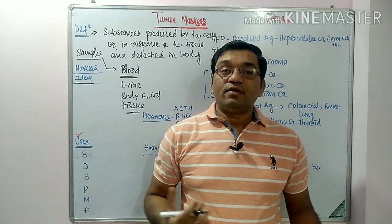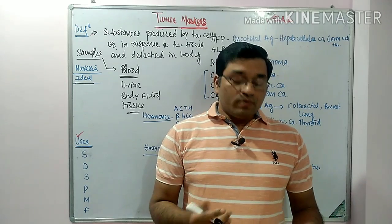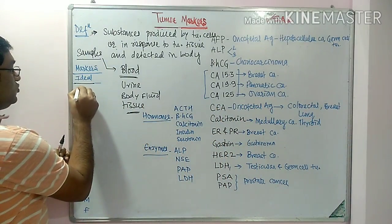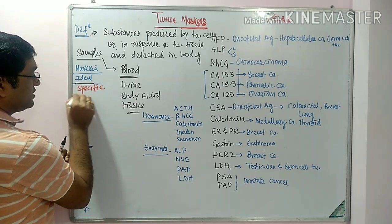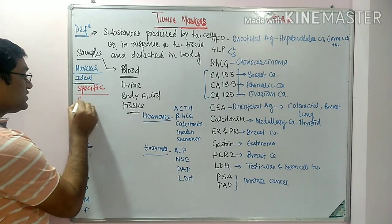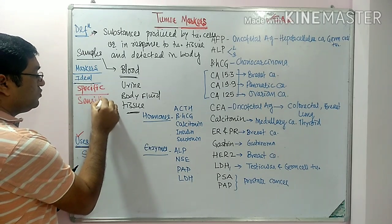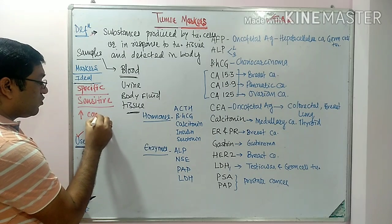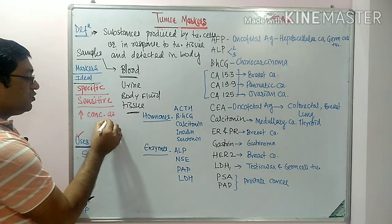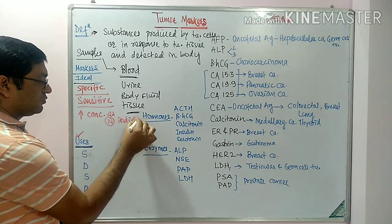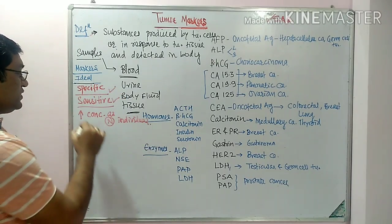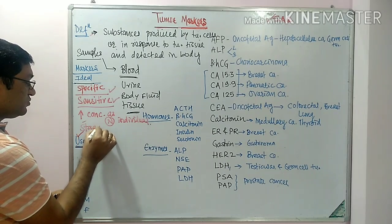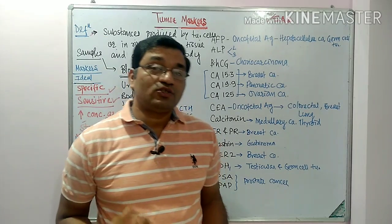What are the characteristics of an ideal tumor marker? First, it should be specific — constantly associated with and specific for that particular cancer. Second, it should be sensitive enough to be detected by the various methods available. Third, it should be present in more concentration as compared to a normal individual. Fourth, it should tell about the stage of the disease.